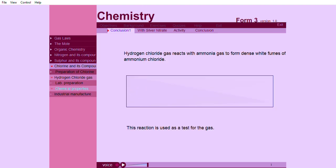Hydrogen chloride gas reacts with ammonia gas to form dense white fumes of ammonium chloride. This reaction is used as a test for the gas.